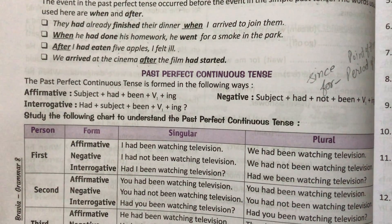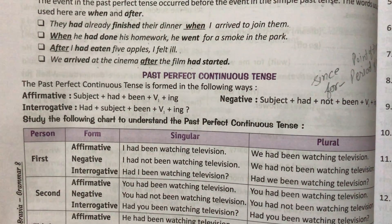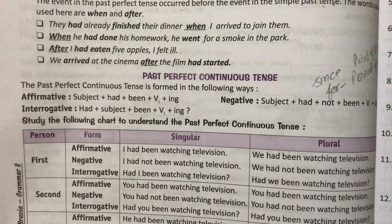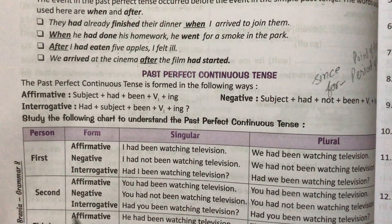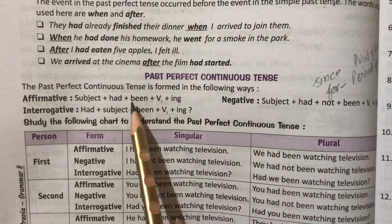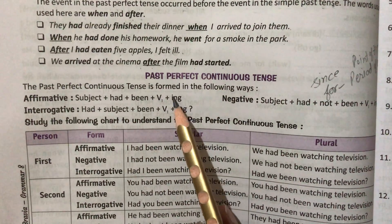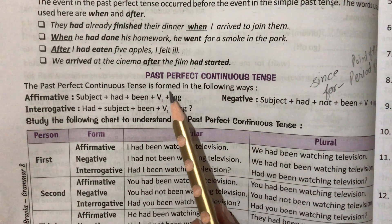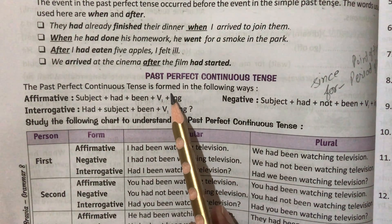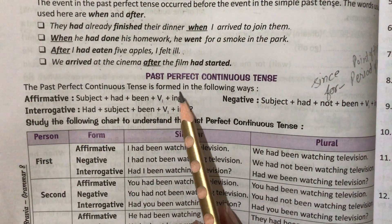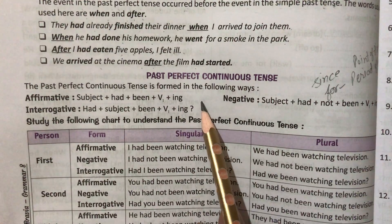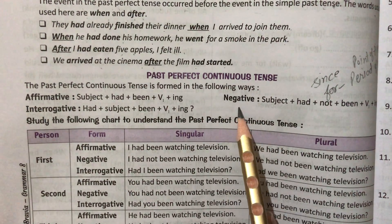Hello everyone, now let us do past perfect continuous tense. Past perfect continuous tense mein identification aapki ye rahegi: se raha tha, se rahe the, se rahi thi.